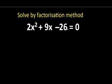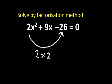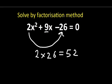However, there's a way we can do it. The way to do this is to multiply the coefficient of x squared, which is 2, by 26. That is 2 times 26, which is 52. Now we're going to find the factors of 52 that will add up or be subtracted to give us 9, the coefficient of x.